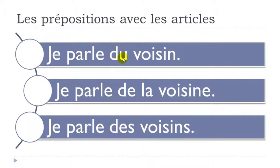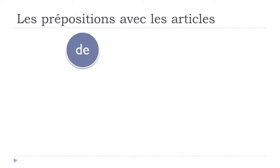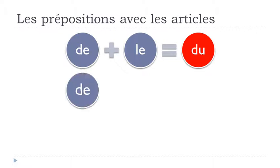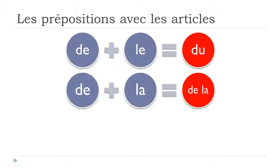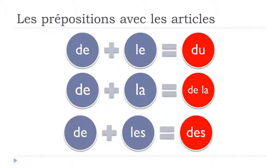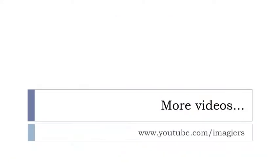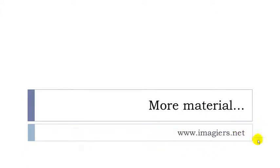To summarize: DE plus LE becomes DU, DE plus LA stays the same - DE LA, nothing happens, and DE plus LES becomes DES. That was a little introduction, because the next lessons will be more tricky but quite interesting - we'll cover more prepositions. If you want more videos, visit youtube.com/imagier, and more material can be found at www.imagier.net. Have a great day, bye-bye.